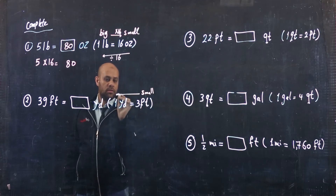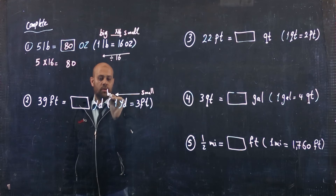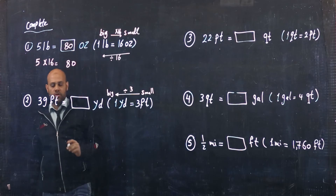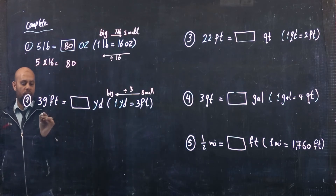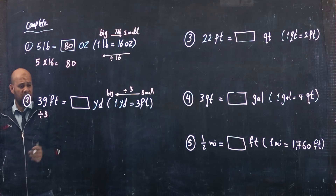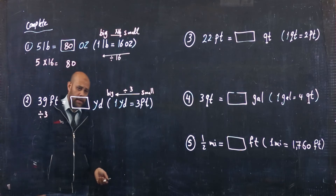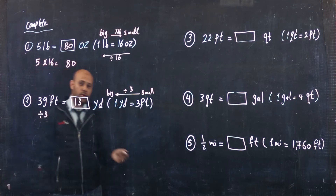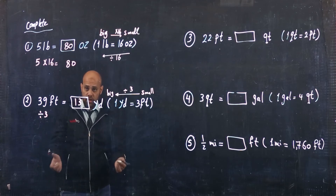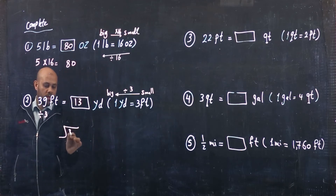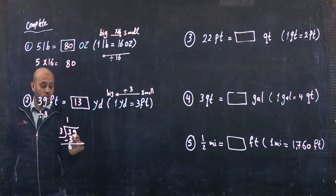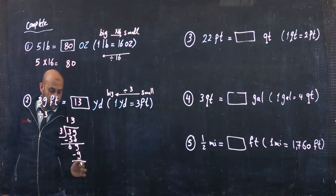So it's from a small unit to a big unit, so I will divide — divide by 3. Take 39 feet and divide by 3. Some students can solve it mentally: 3 divided by 3 equals 1, and 9 divided by 3 equals 3, giving 13. Or using long division: 39 divided by 3 — 3 divided by 3 equals 1, bring down 9, 9 divided by 3 equals 3. Same result.